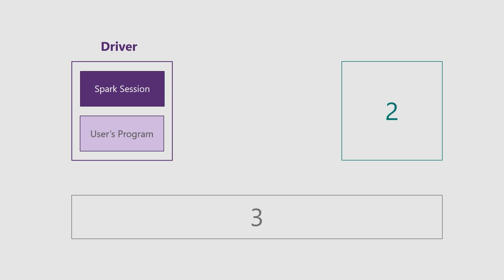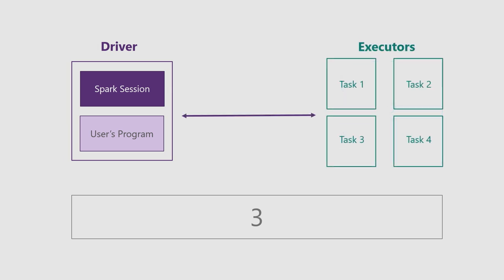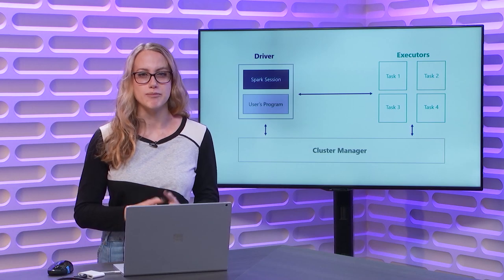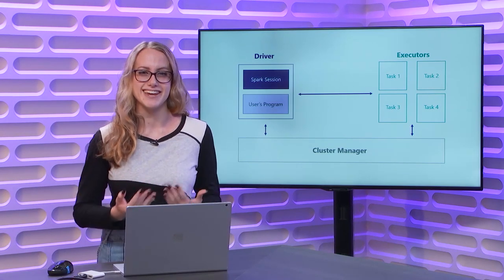Those tasks are divided amongst our second component, which are the executors or the worker nodes. The executors are on something known as a cluster. Each executor takes one small task — one small piece of our user's program — and finishes executing it. The third component of our architecture is the cluster manager, which helps with dividing up the tasks and allocating resources amongst our driver and our executors.